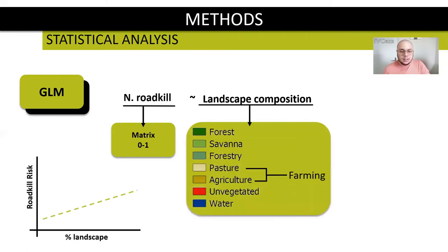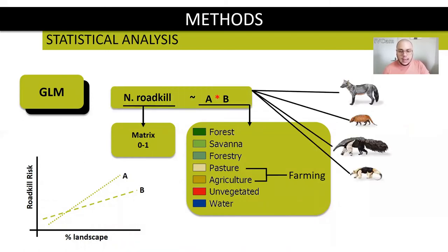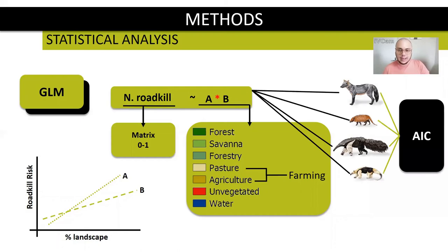So we ran the regressions considering one land use, or two land use summed, or interaction between them. We did that for all combinations possible for all four species, and we selected the models by Akaike information criteria.